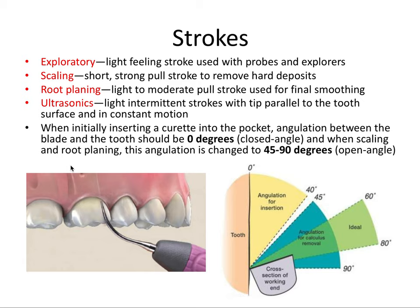This image is helpful to visualize how to enter and exit a periodontal pocket when using a curette. When initially inserting a curette into the pocket, the angulation between the blade and the tooth should be zero degrees, known as closed angle. When scaling and root planing, this angulation is changed to 45 to 90 degrees, known as open angle.